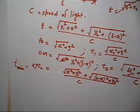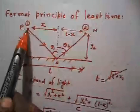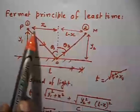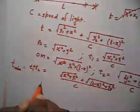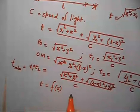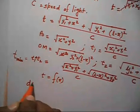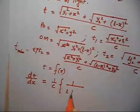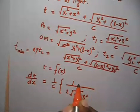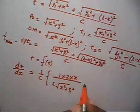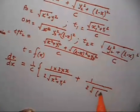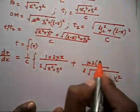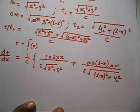Now X is variable — by changing X we get different paths. If the light ray strikes at different points, we get different values of X. So time is a function of X. To find minimum time, we differentiate the equation with respect to X. So dT/dx = (1/C) × [1/(2√(X² + Y1²)) × 2X + 1/(2√((L−X)² + Y2²)) × 2(L−X) × (−1)].